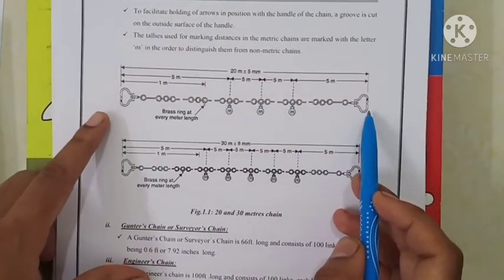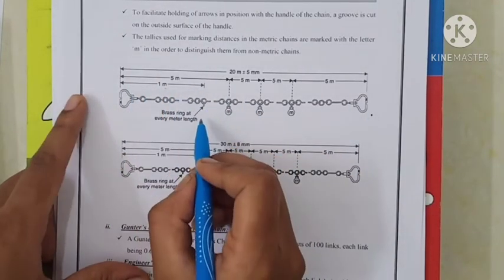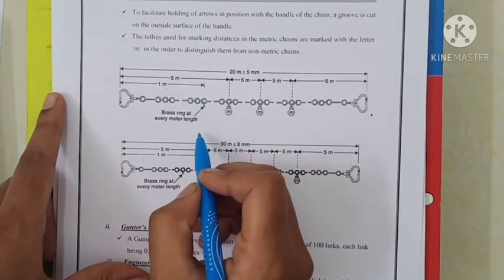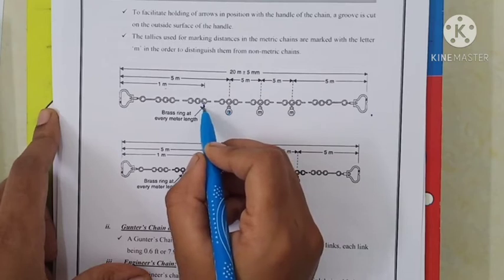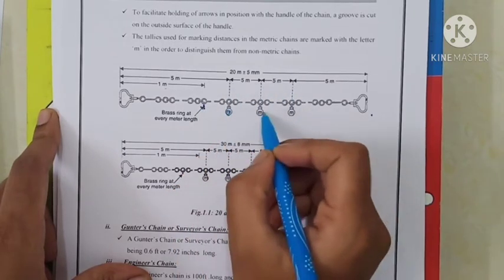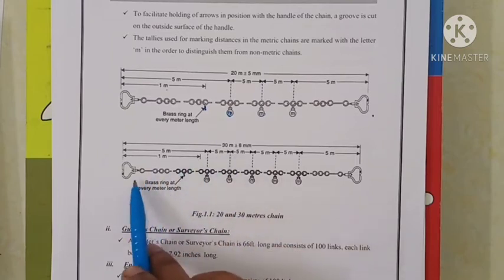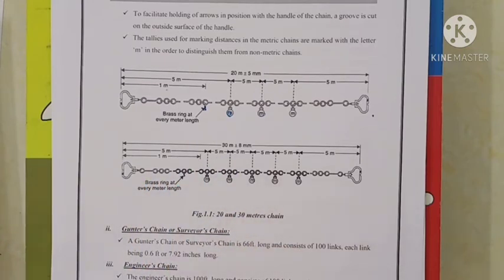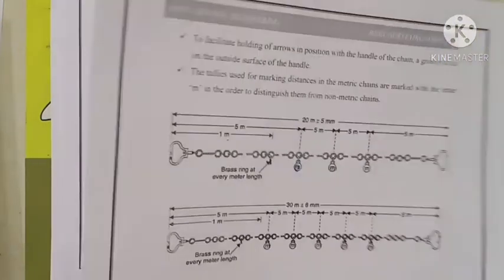Looking at the chain, tallies are fixed at 5 meter intervals and brass rings are provided at 1 meter intervals. To facilitate holding the arrow in position with the handles of the chain, a groove cut is provided at the handles.